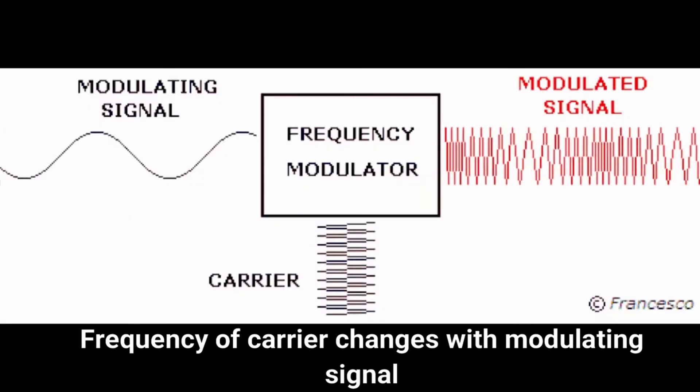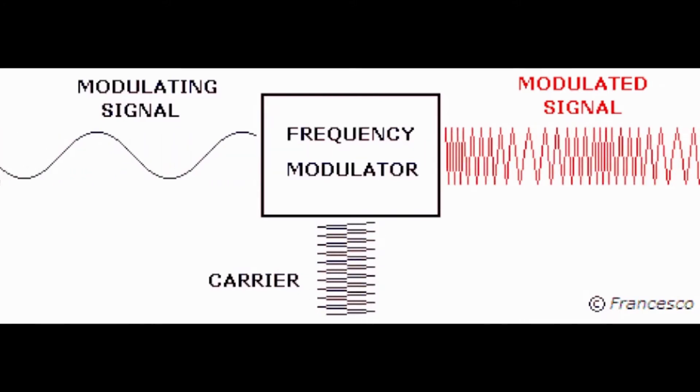Frequency modulation. In this type of modulation, frequency of the carrier signal will be altered with respect to modulating signal. As a result, we will obtain a frequency modified signal in output.